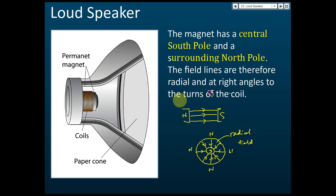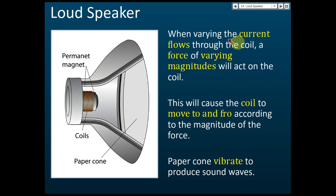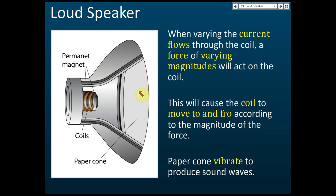When varying — that is, alternating — current flows through the coil, a force of varying magnitude acts on it. This alternating current is typically produced by a microphone and moves to and fro. The resulting force moves left, right, left, right, causing the coil to move to and fro according to the magnitude of the force. This causes the paper cone to vibrate and produce sound waves. Understanding how a loudspeaker functions is important as it may be asked in essay questions.